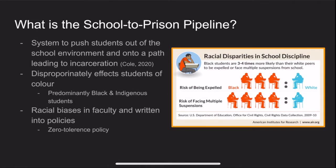So what exactly is the school to prison pipeline? It is a process in which the education system perpetuates certain policies and punishments that push students out of the school environment and into positions that act as a pathway to eventual incarceration. This phenomenon disproportionately targets students of color, in particular Black students. Some examples are high expulsion rates and harsher punishments and suspensions than their white counterparts. Some of the most problematic policies are zero tolerance policies, which often have racial biases written into them.